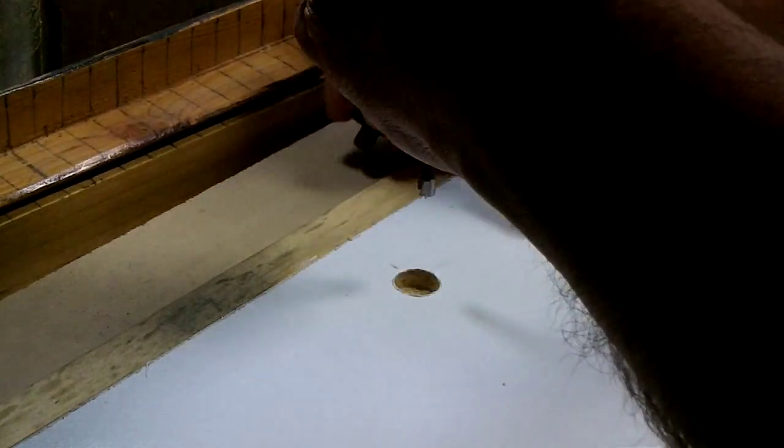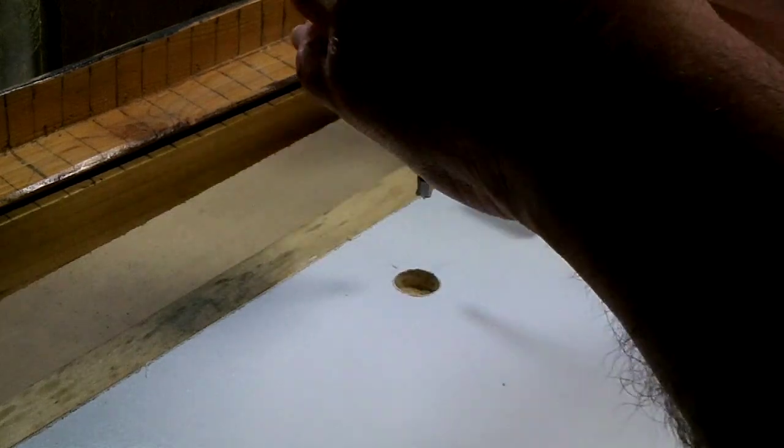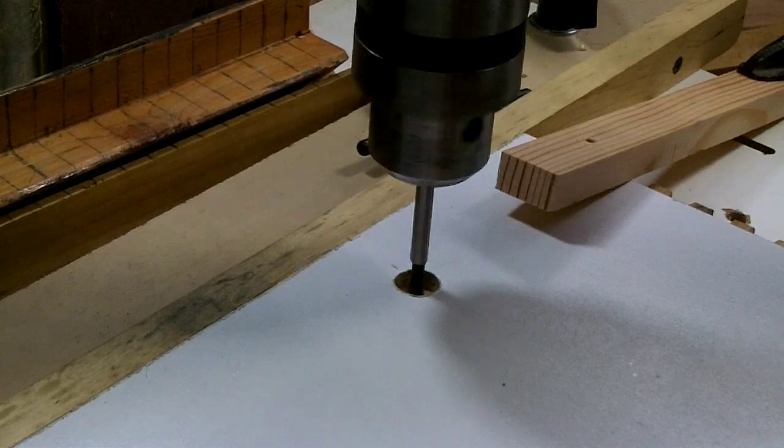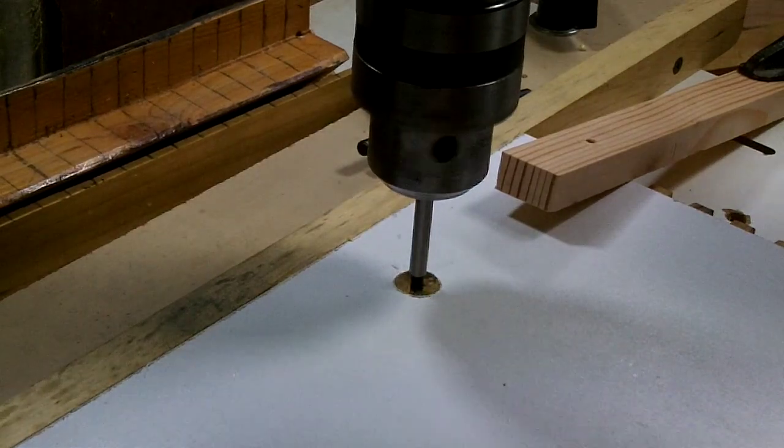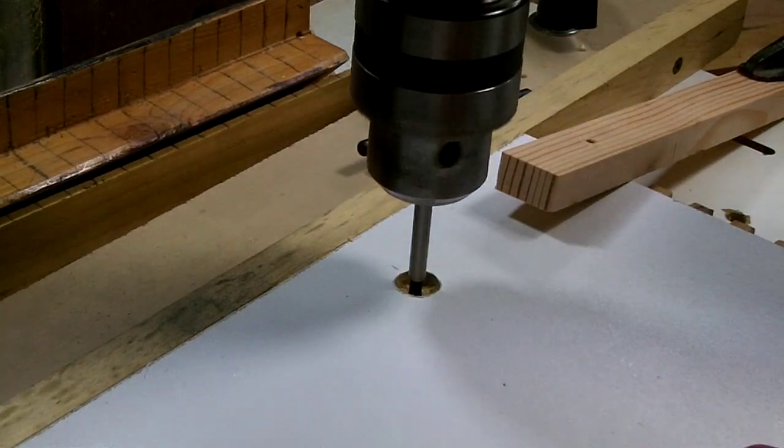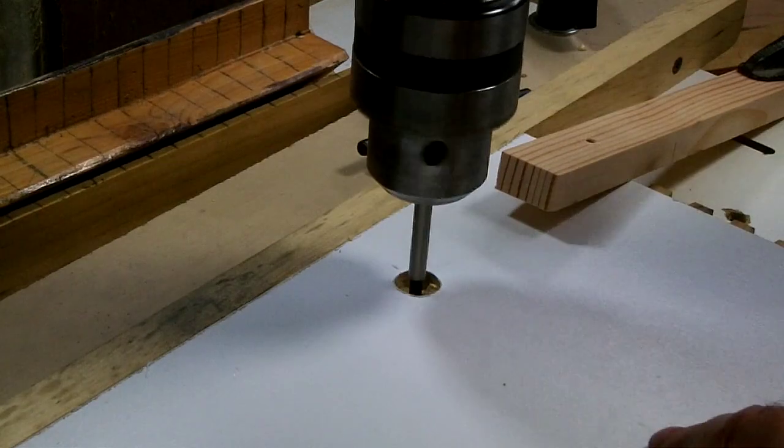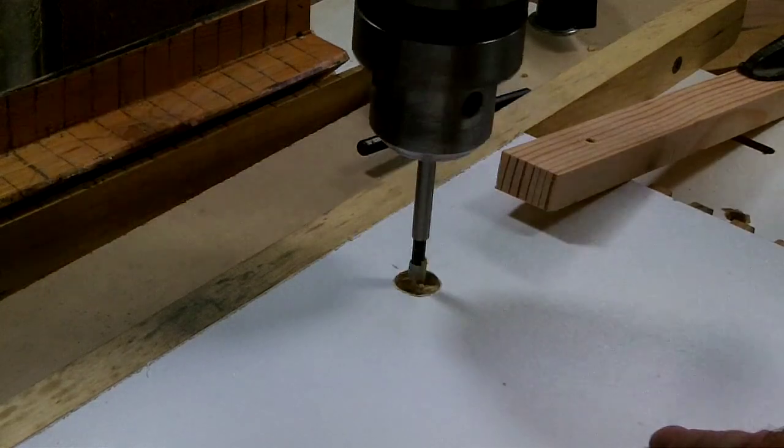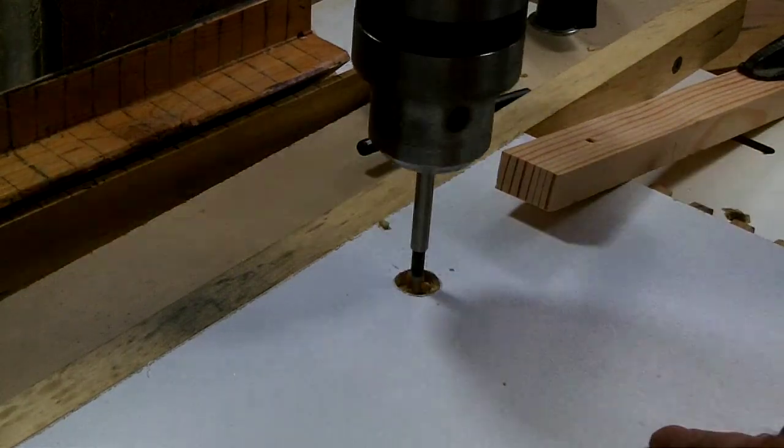Without moving the table, I'm going to change the bit out and put a quarter inch Forstner bit in. Then I'm going to drill all the way through the table. This will create a drop hole from the top of the table down into the gold bottle. This is the path the gold will follow as it goes down into the bottle.